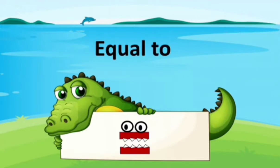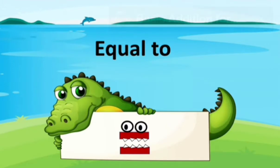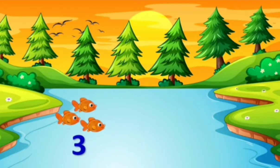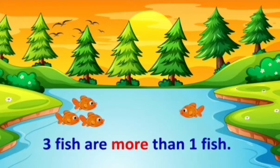So that is called less than. Equal to — when both sides the numbers are equal, then we use the sign equal to, meaning both the numbers are equal. Now let's understand with some examples. Remember: this sign has three fishes, and this sign has only one fish. Three fish are more than one fish.